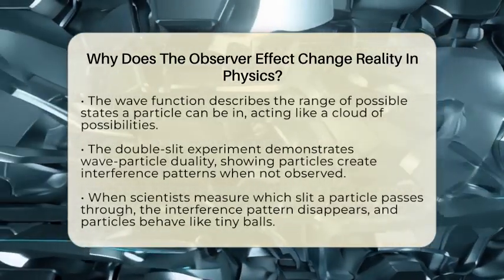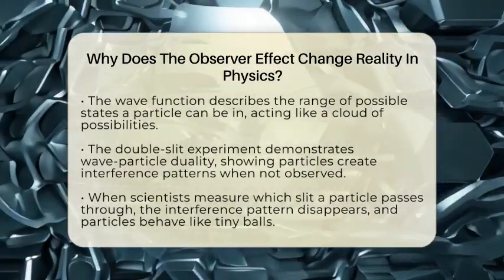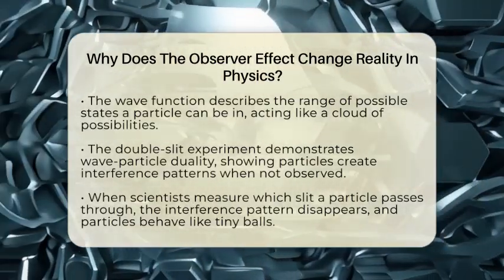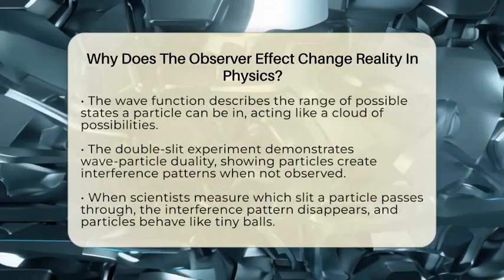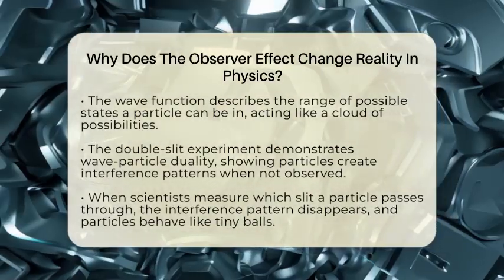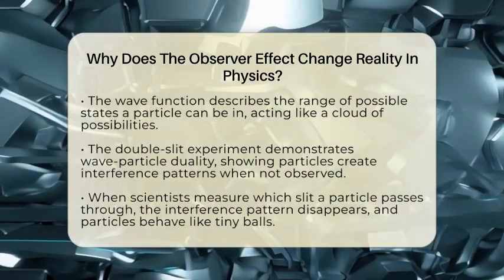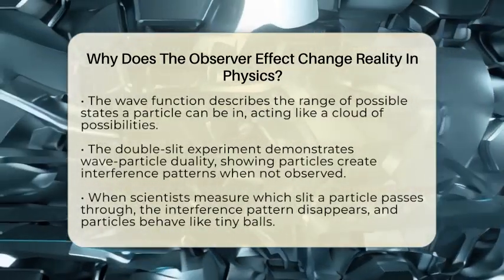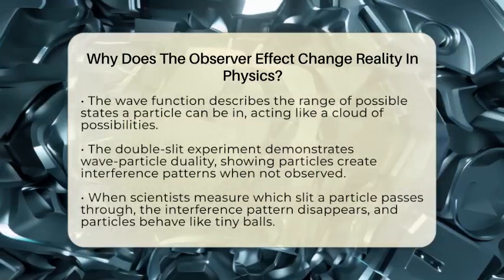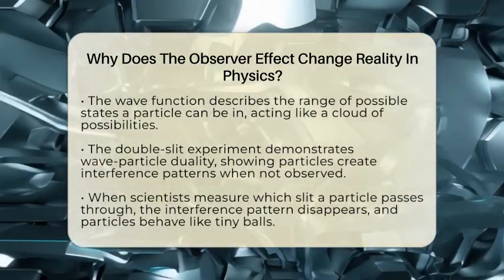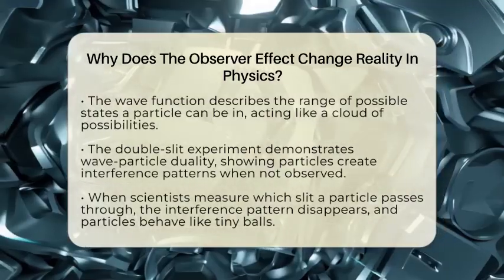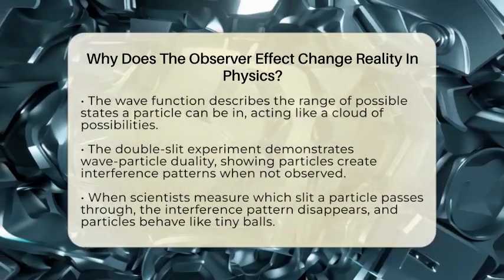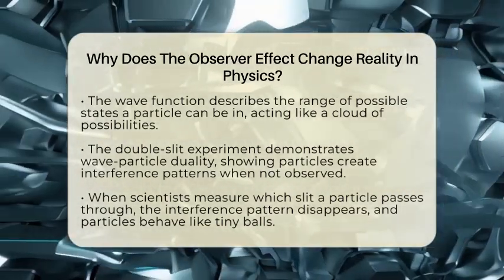A famous experiment called the double-slit experiment helps explain this. When particles like electrons or photons pass through two slits without anyone watching, they create an interference pattern on a screen behind the slits. This pattern looks just like waves interfering with each other, which suggests that each particle is passing through both slits at once, behaving like a wave. But here's the twist: when scientists try to measure which slit a particle actually goes through, the interference pattern disappears. Instead, the particles act like tiny balls passing through just one slit, creating two clusters.